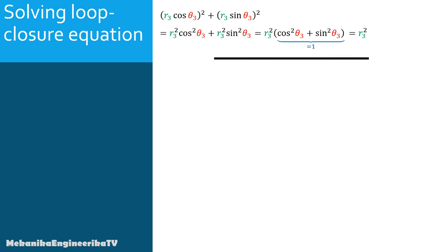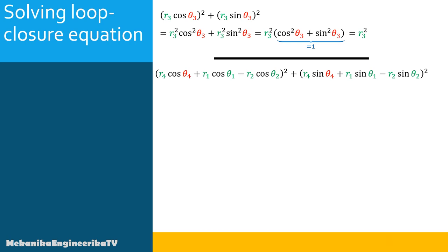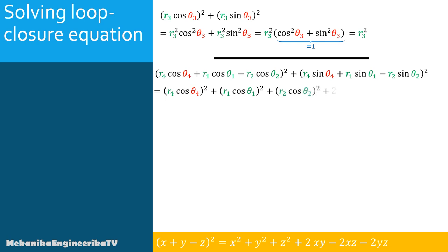At the right side, we have (R4·cos θ4 + R1·cos θ1 − R2·cos θ2)². We apply the algebraic identity (X + Y − Z)² = X² + Y² + Z² + 2XY − 2XZ − 2YZ. Using this identity, the first squared term expands to: R4²·cos²θ4 + R1²·cos²θ1 + R2²·cos²θ2 + 2R1R4·cos θ1·cos θ4 − 2R2R4·cos θ2·cos θ4 − 2R1R2·cos θ1·cos θ2.